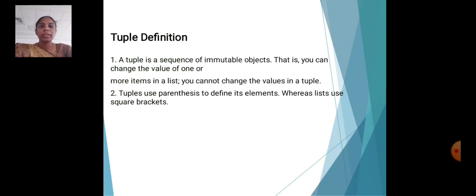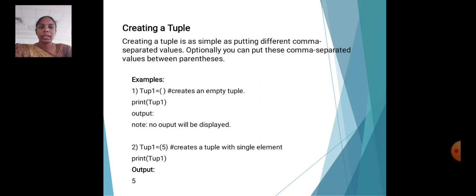Tuples. A tuple is a sequence of immutable objects. That is, you can change the value of one or more items in a list, but you cannot change the value in a tuple. Tuple uses parentheses to define its elements, whereas list uses square brackets. Creating a tuple is as simple as putting different comma-separated values, optionally between parentheses.